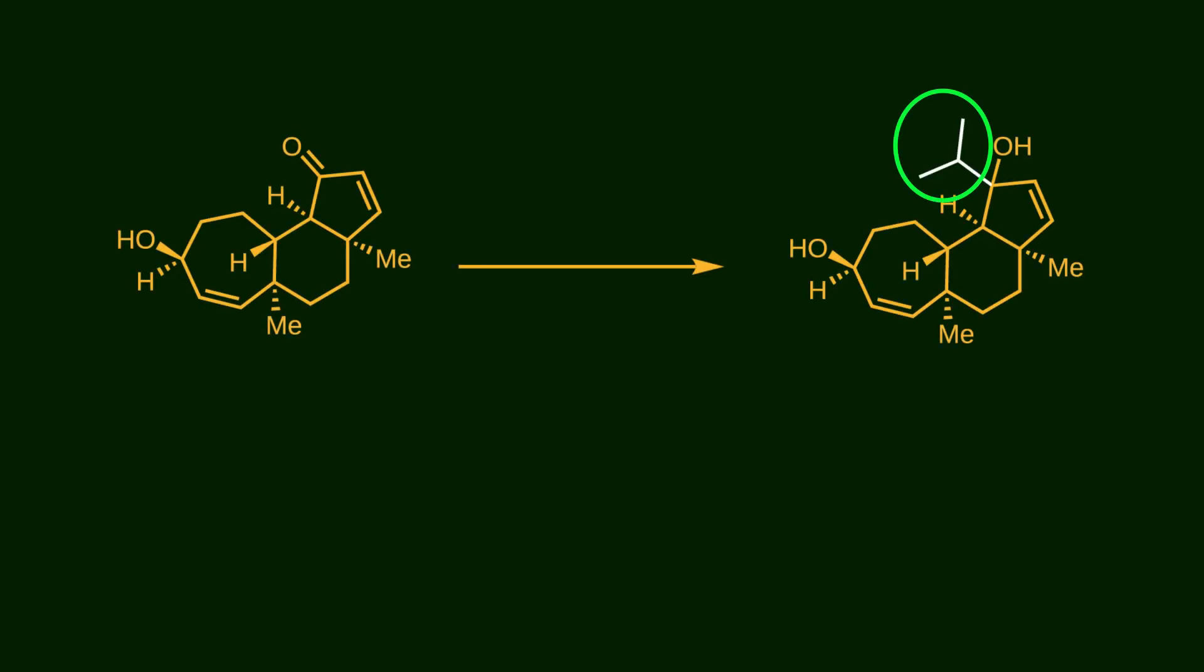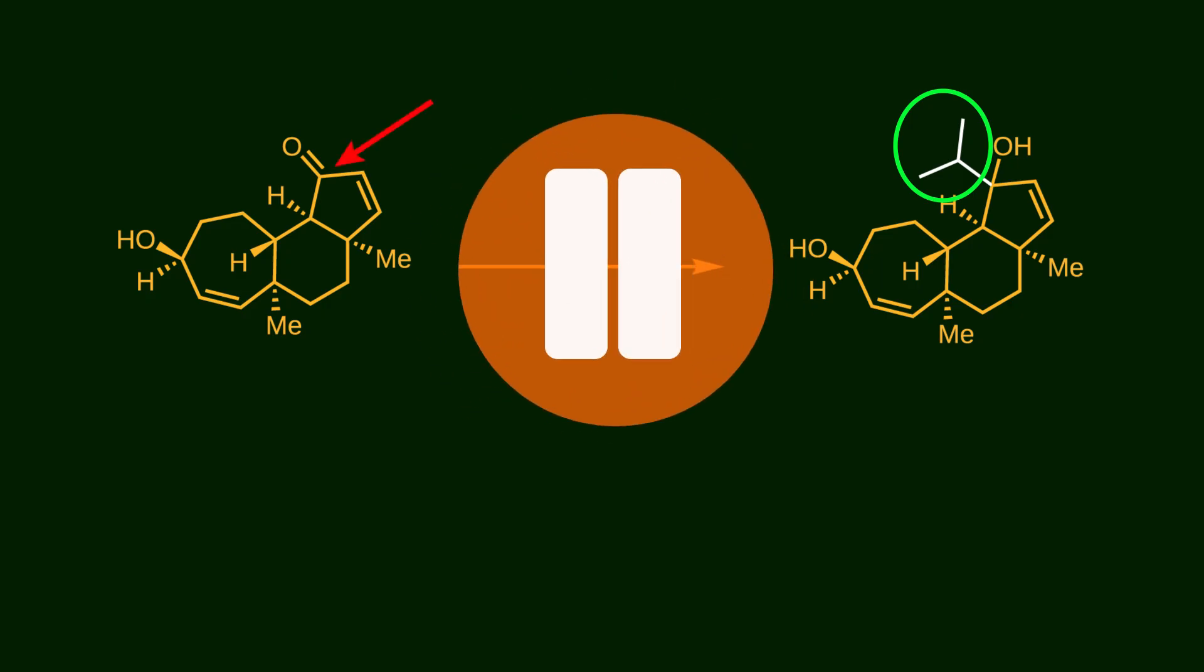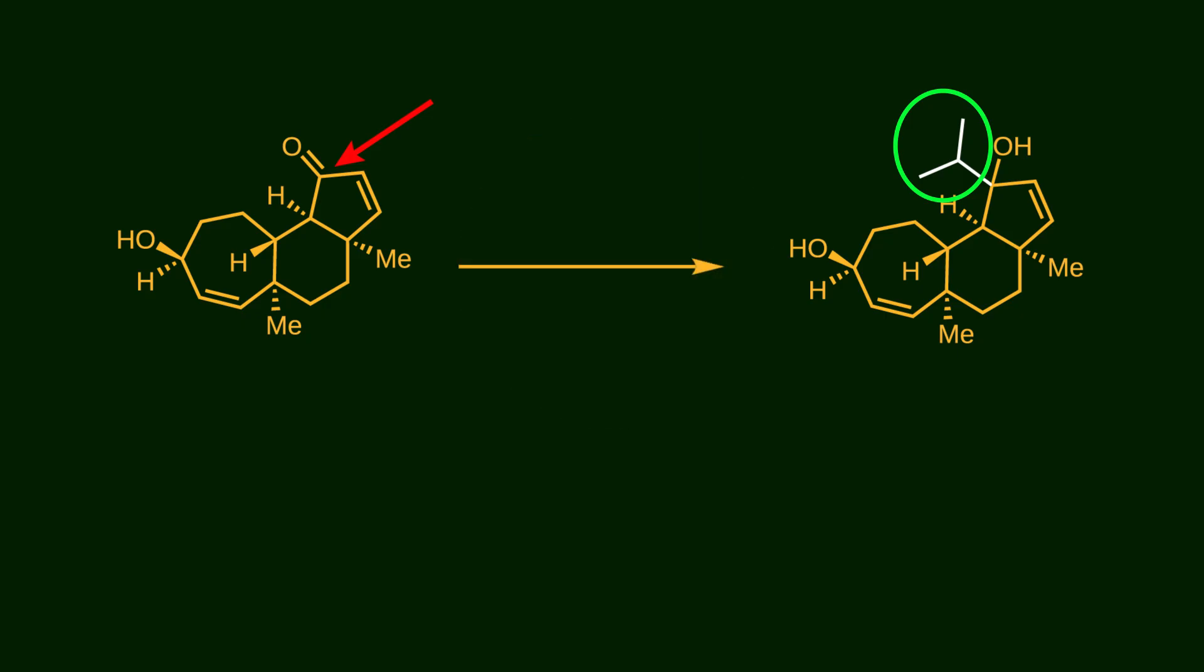After the reduction, an isopropyl group is added to this carbonyl carbon. Pause the video and think about different modes of reaction. Try to figure out what reagents could accomplish this transformation. Once again, we are dealing with a chemoselective reaction. The nucleophile can add via a 1,4-Michael addition or a direct 1,2-addition. In this case, isopropyl lithium is used. It is a suitable carbon-based nucleophile that attacks directly at the carbonyl group.